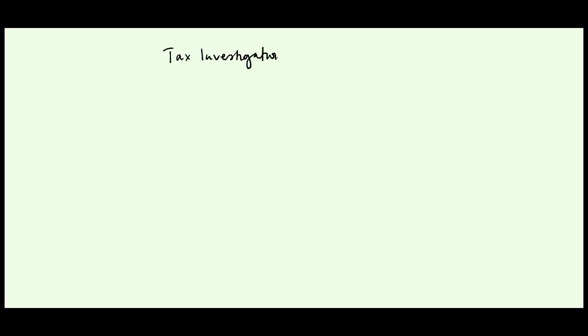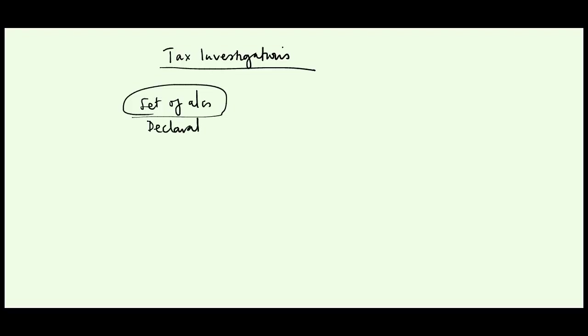Welcome to this tutorial. Today we are going to look at tax investigations. There's nothing uniquely complex about this — we'll be dealing with a scenario where you are given a set of accounts or tax declarations and you review them to see whether they are okay or not. An alternative scenario is where the revenue authority has reviewed the books of a company and given an assessment, and yours is to review that assessment and determine whether it is correct. If the taxman has asked the entity to pay more than they should, then you should appeal.